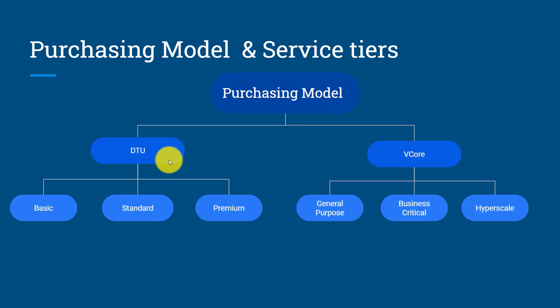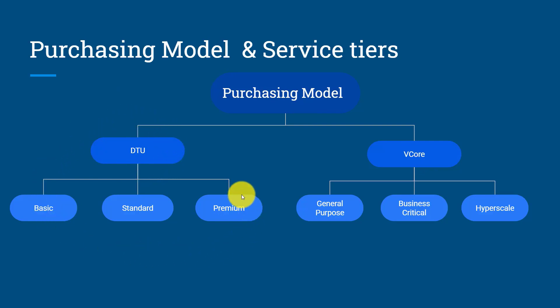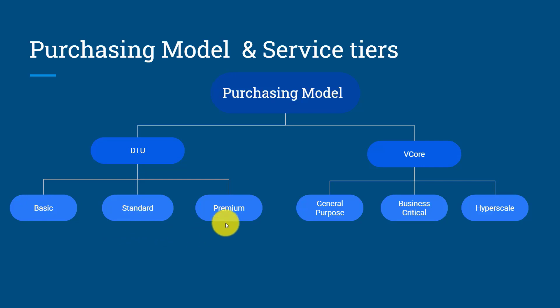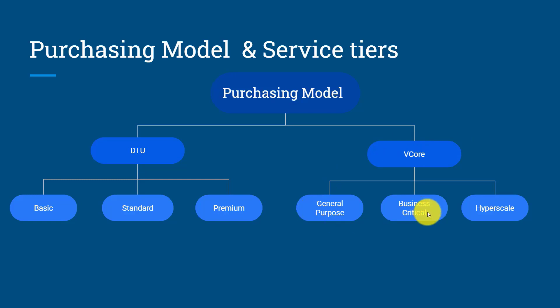Under the DTU model we have three service tiers: basic, standard, and premium. Under the vCore based purchasing model we have general purpose, business critical, and hyperscale service tier.